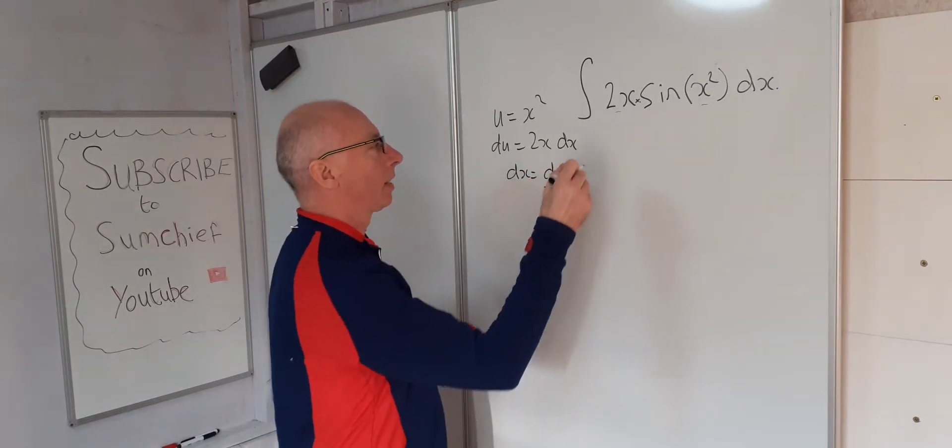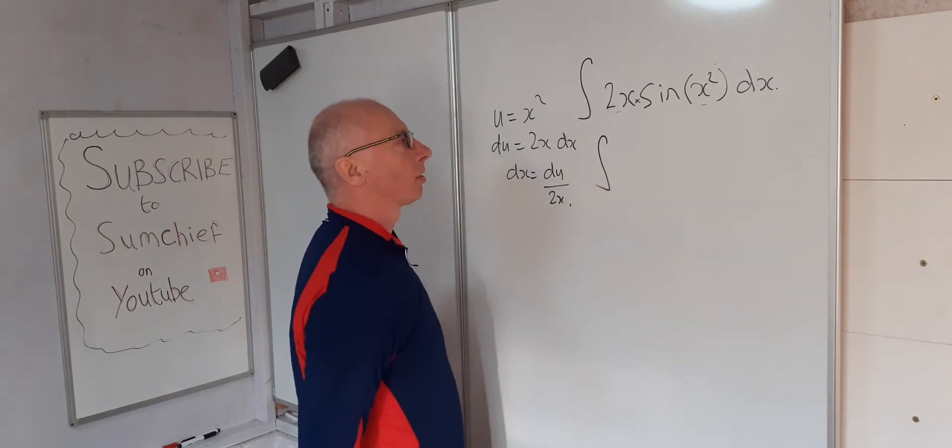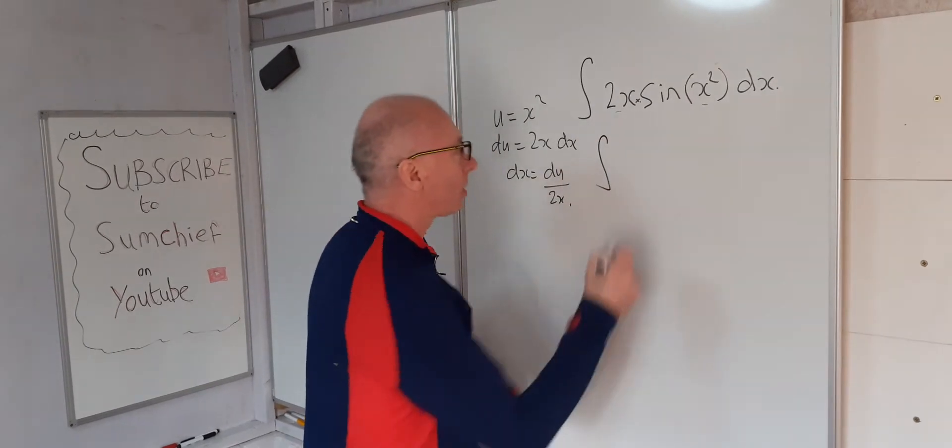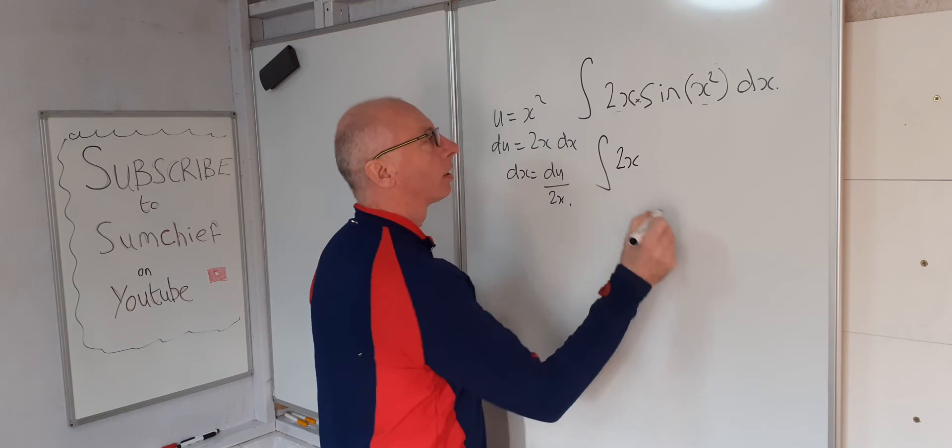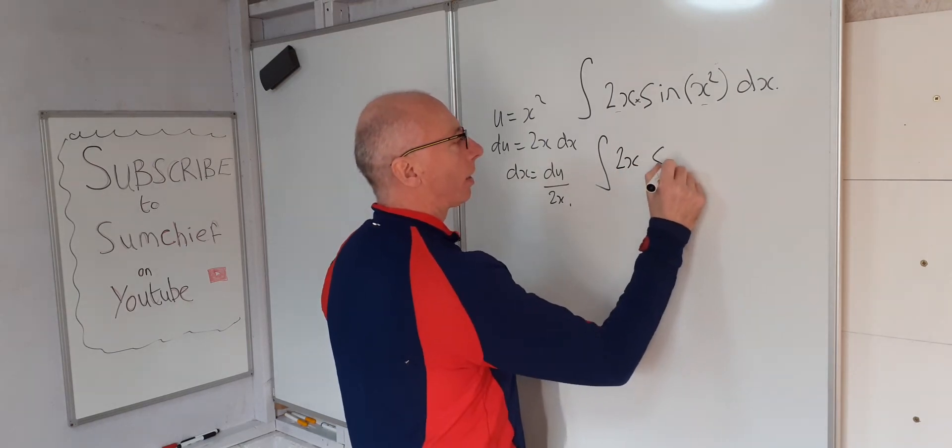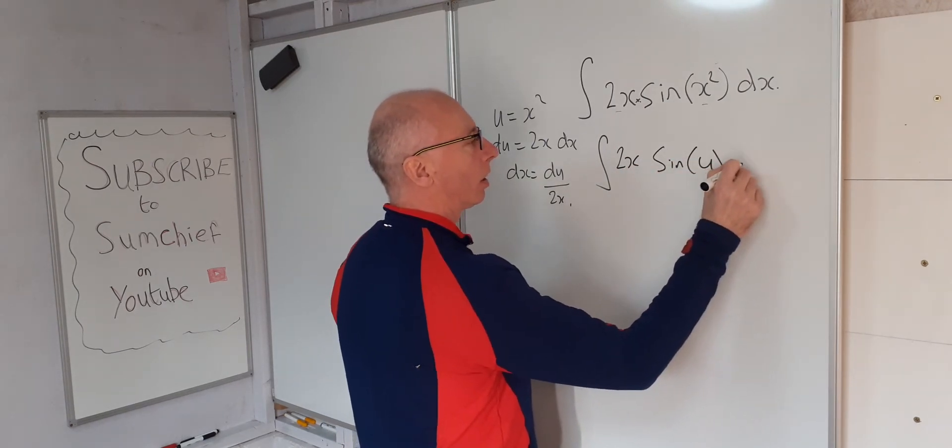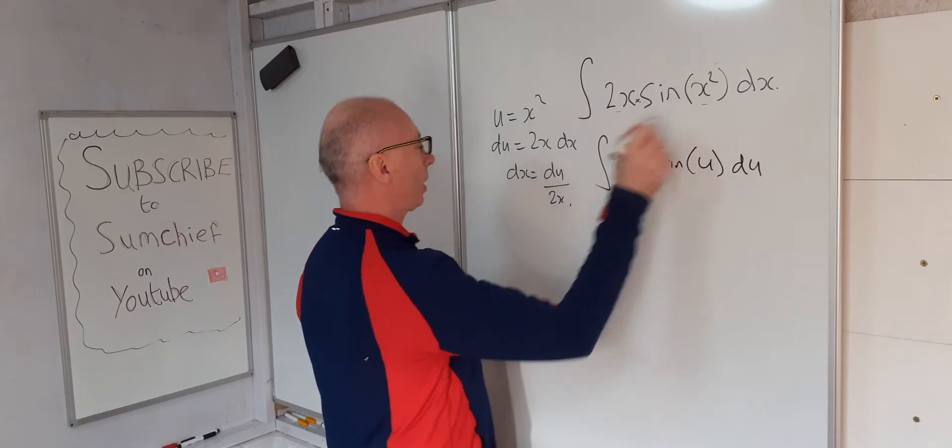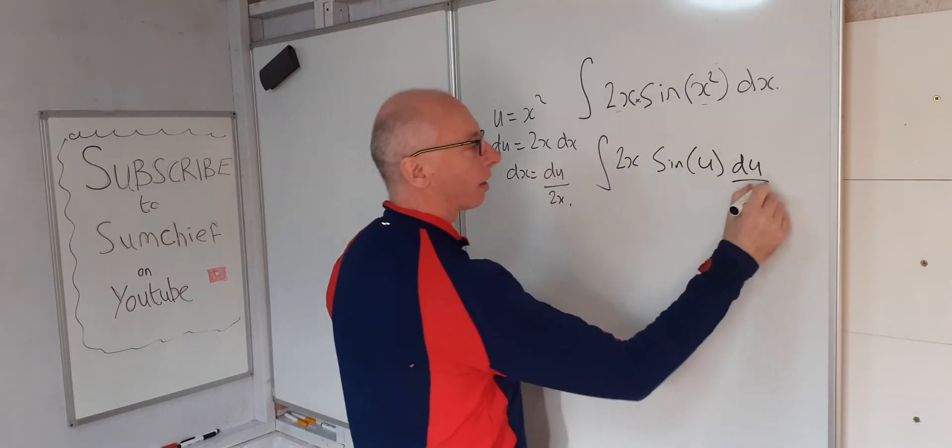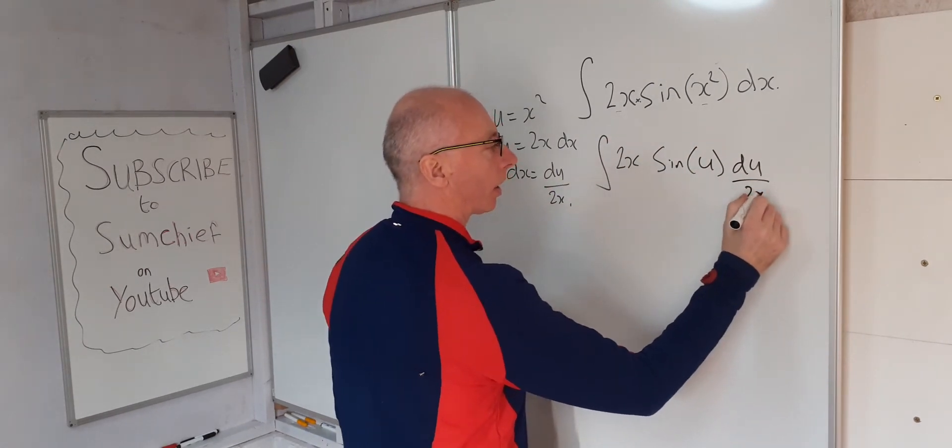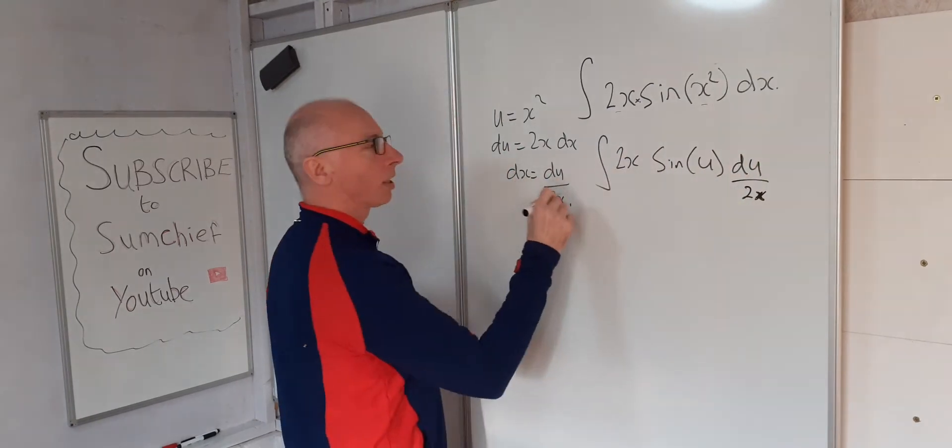Right, let's substitute that in. So the integral, let's put this in: 2x sine of u, du for dx over 2x. So dx is du over 2x, so we've just substituted that in.